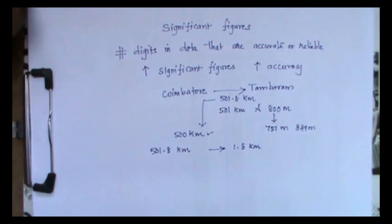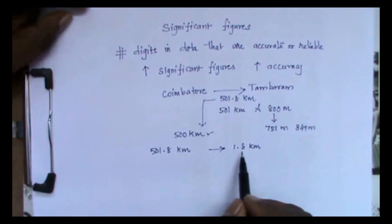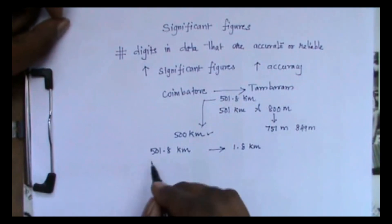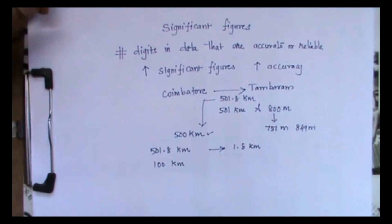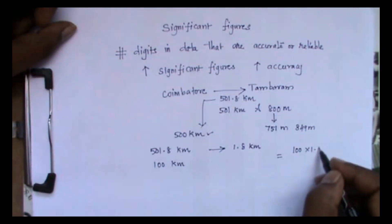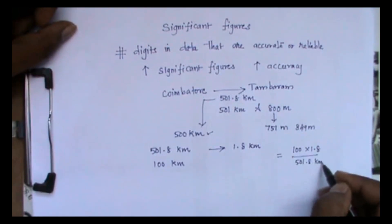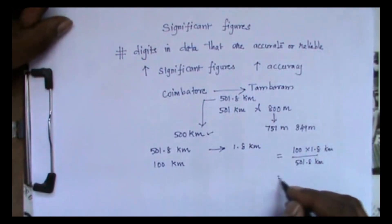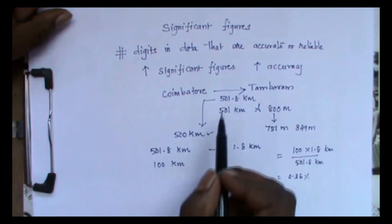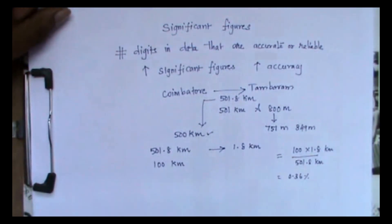When I use 500 km in the problem, the error percentage is calculated as: the difference is 1.8 km for 501.8 km. To find the percentage, I go for cross multiplication: 100 × 1.8 divided by 501.8 km, which gives 0.36 percent. It is very less — less than 1 percent error — so it is acceptable. Comparing 501.8 and 500, 501.8 is more accurate as it has four digits.